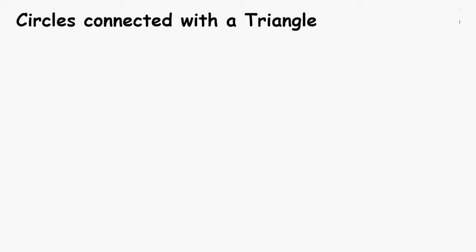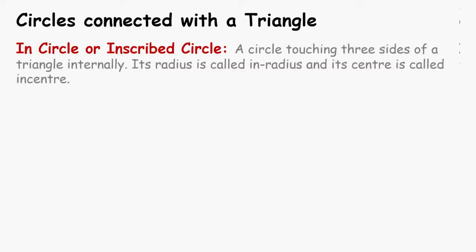We will discuss circles connected with a triangle. The first circle is in-circle or inscribed circle. A circle touching three sides of a triangle internally is called in-circle. Its radius is called in-radius and its center is called in-center.